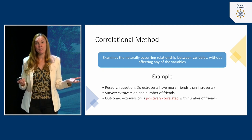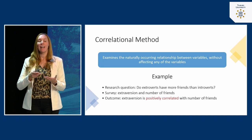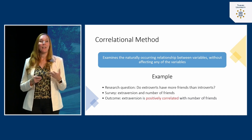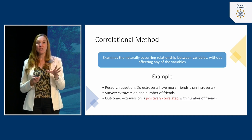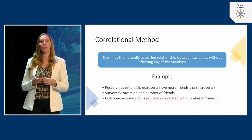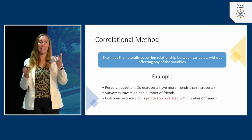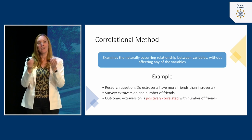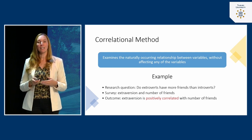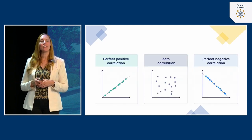This would be a wonderful question to address using a correlational design. What you can do is use a survey — a questionnaire — in which you simply ask participants about the number of friends they have and have them fill out an extroversion questionnaire. The outcome could be that extroversion is positively correlated with the number of friends, which would be in line with your hypothesis.